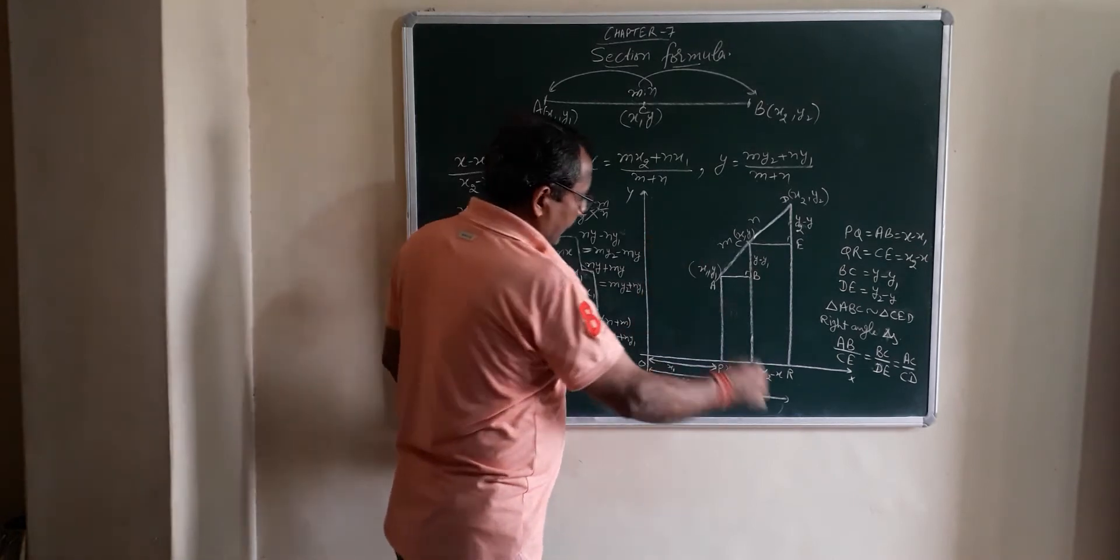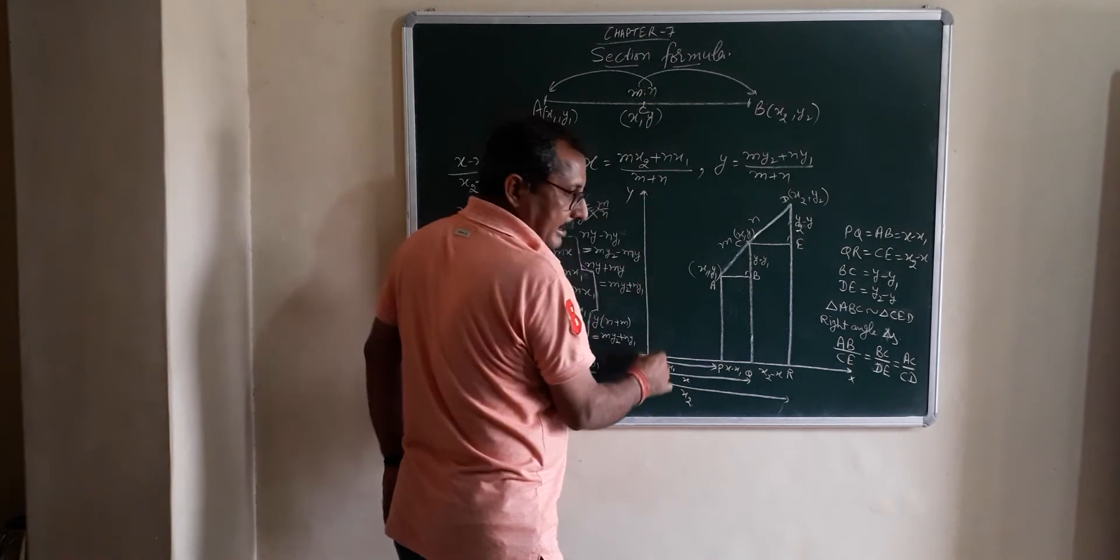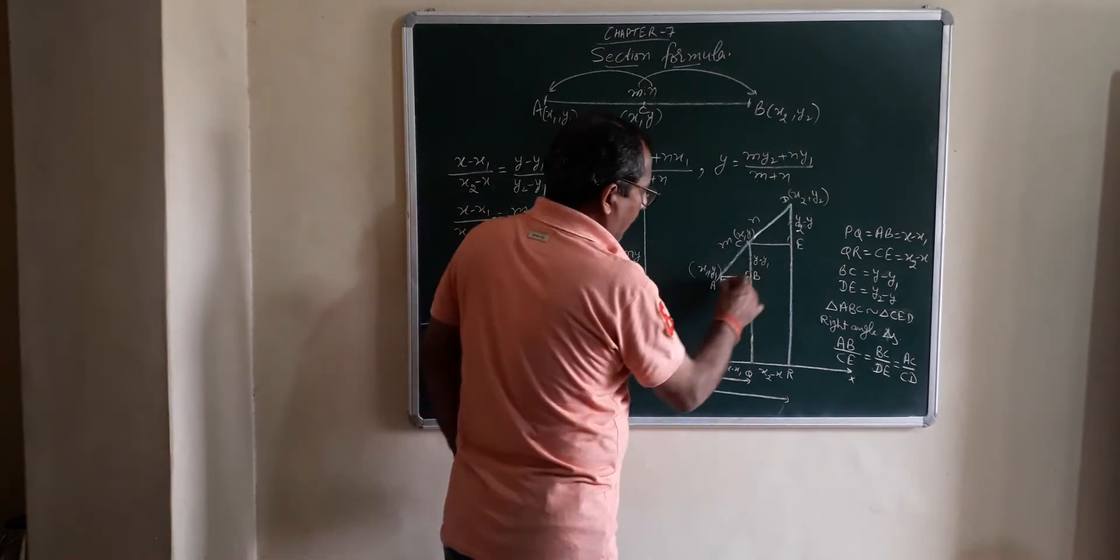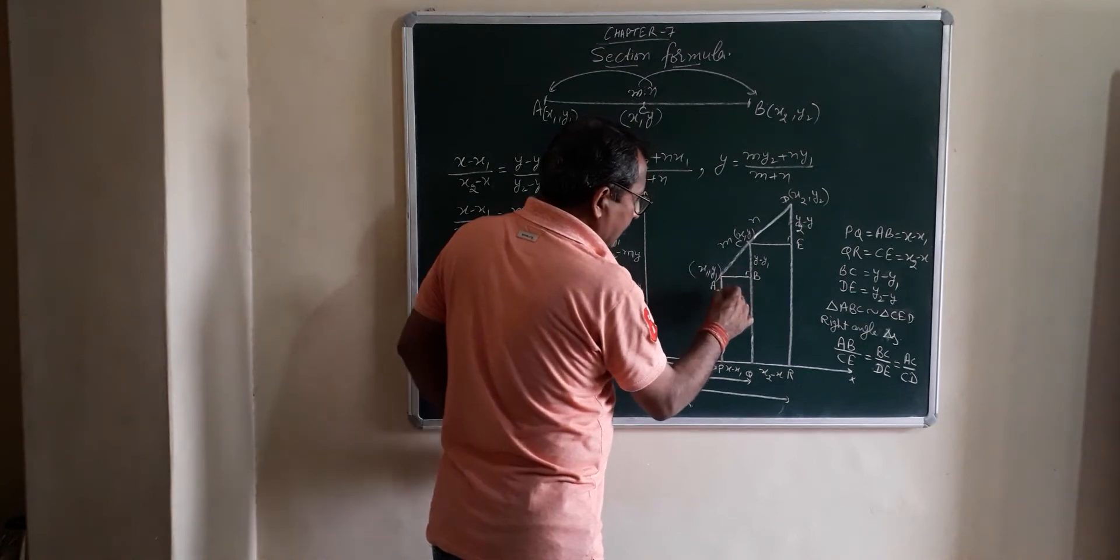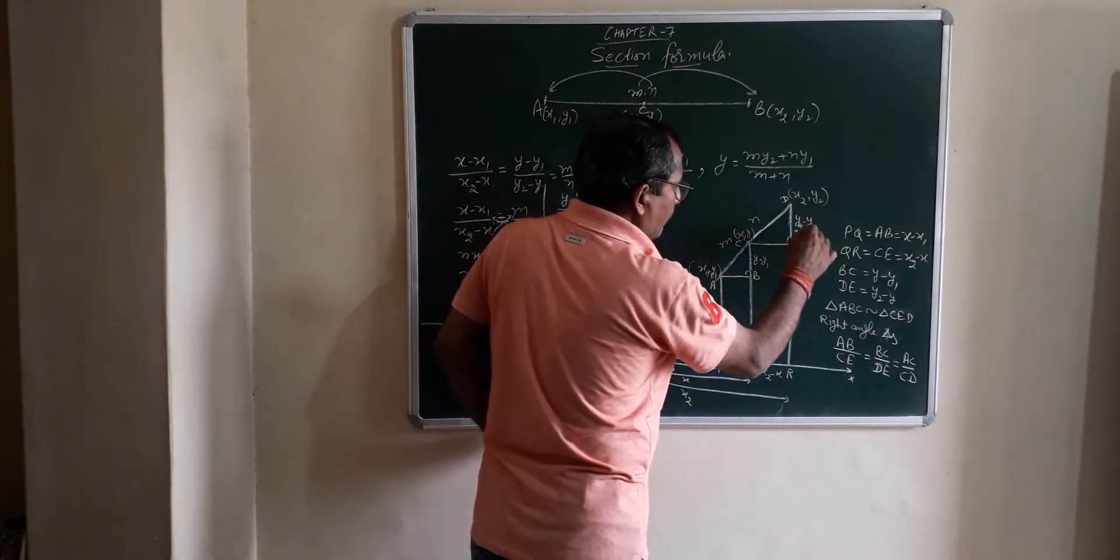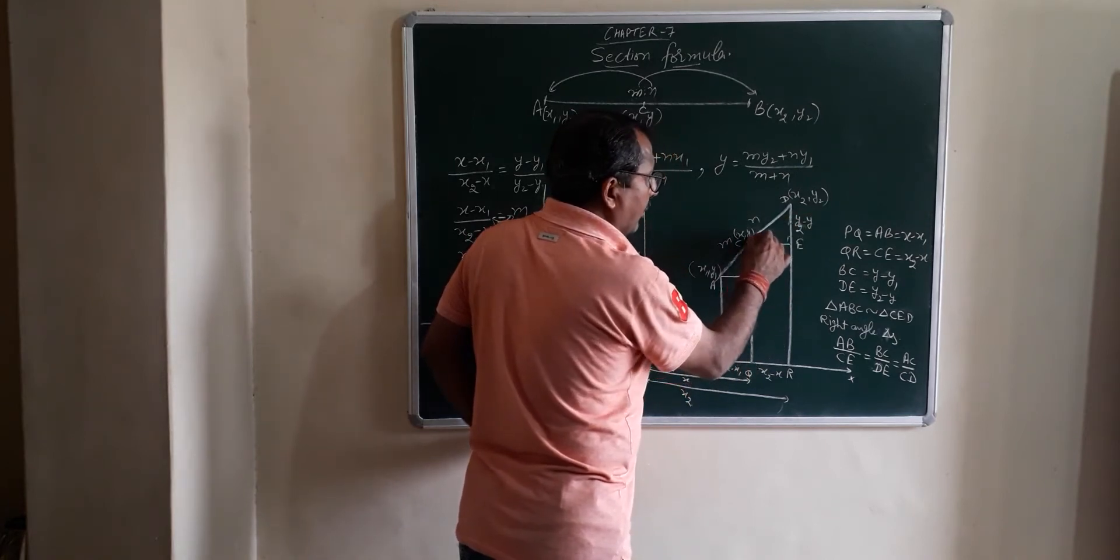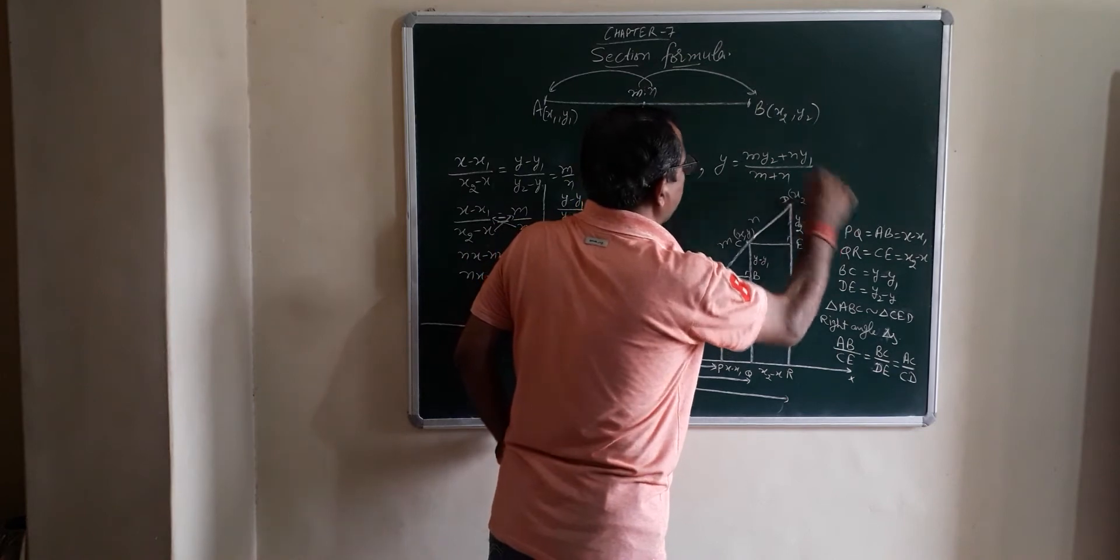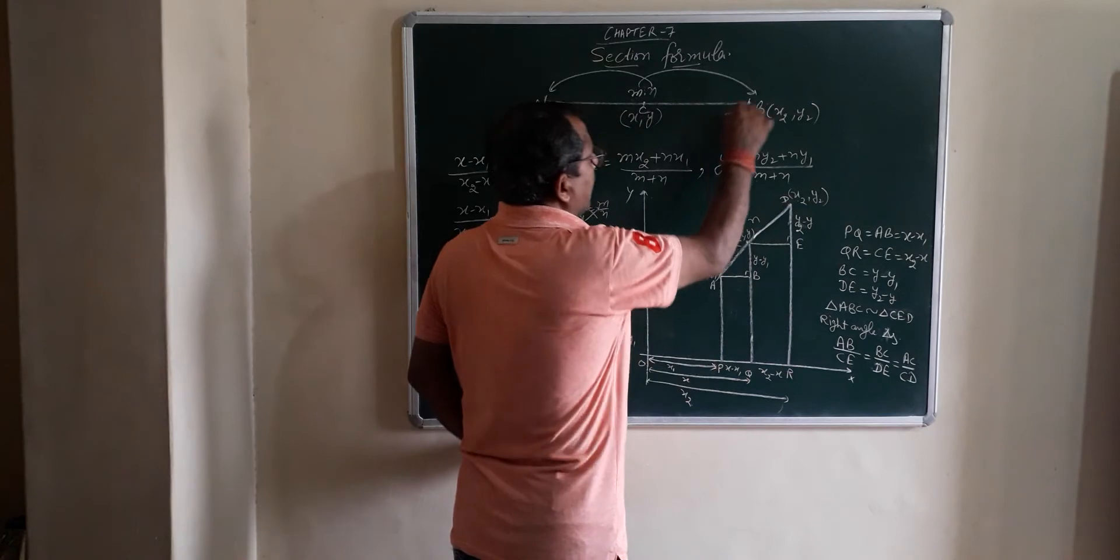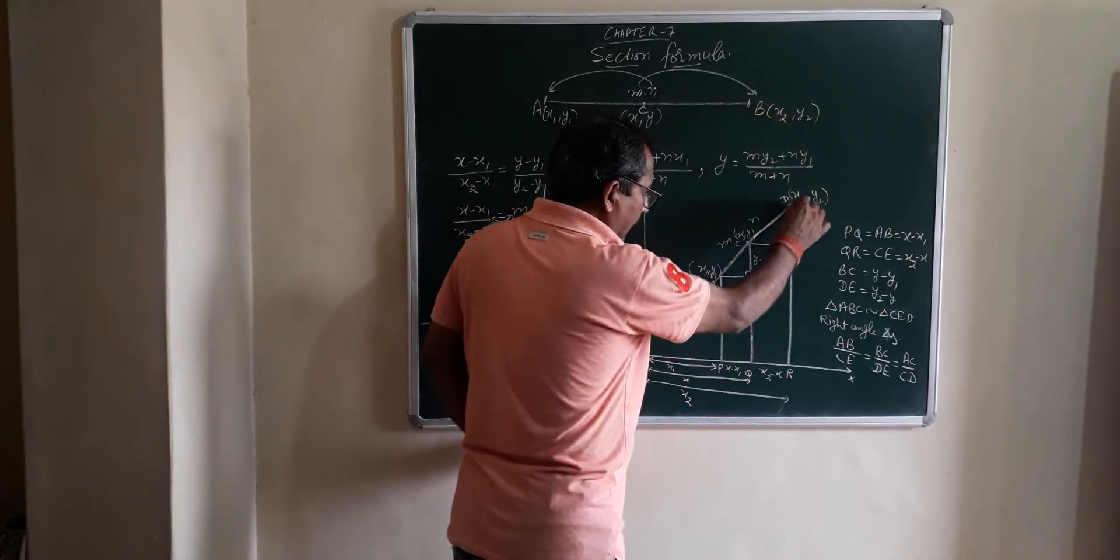Cartesian system. That is the horizontal line X, vertical line Y, intersect at point O. A point, first point A, X1, Y1. Second point C, X, Y. Third, X2, Y2. You can say B. Here B, A, D.